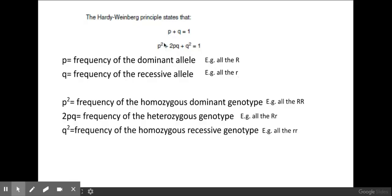p² here is the frequency of the homozygous dominant genotype, for example all the big R's. 2pq is the heterozygous individuals with the genotype of a big R and small r. And q² here is the frequency of the homozygous recessive genotype, for example small r small r. Using these two formulas you can calculate the different frequencies of the different genotypes or alleles that you are asked to calculate.